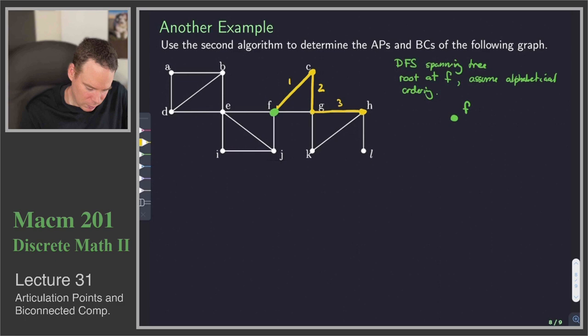We're at a dead end now, so we backtrack back to H. And then smallest neighbor is L, so that's 5. And now we're at a dead end, so we backtrack to H, backtrack to G, backtrack to C, backtrack to F. And then we go off in the other direction now.